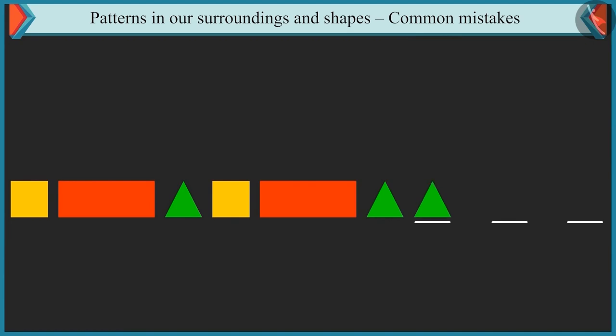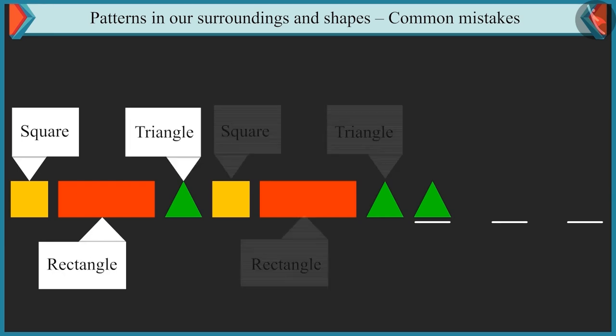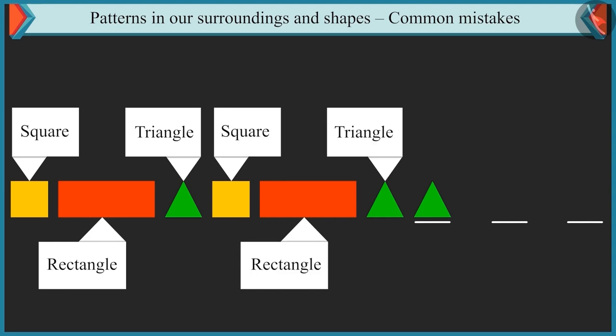You have to look carefully at the pattern and understand it no matter how many shapes or colours are used. Look, the square, rectangle and triangle. These three shapes are repeated in one order in this pattern. Yes. First shape is square, second is rectangle and third is triangle.